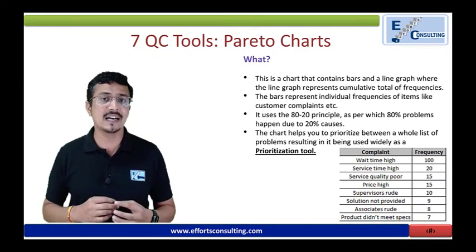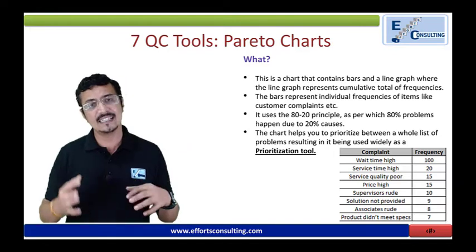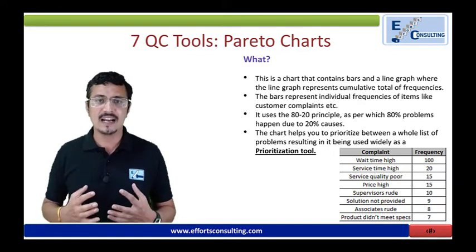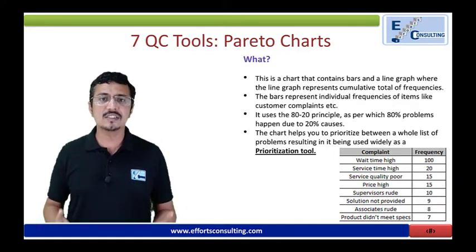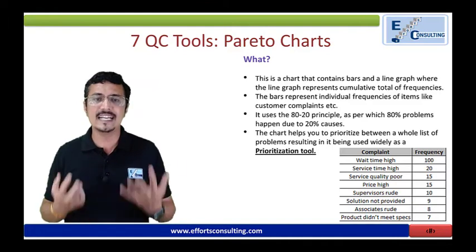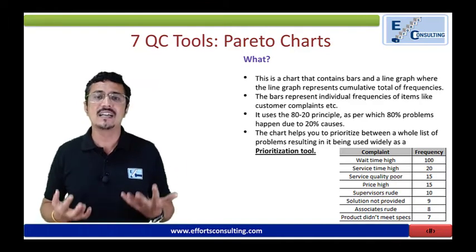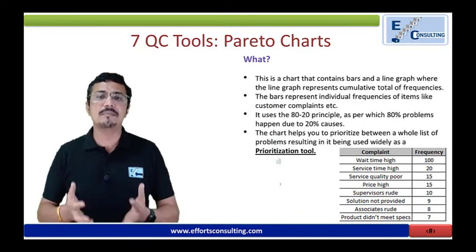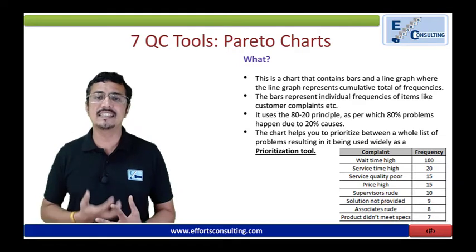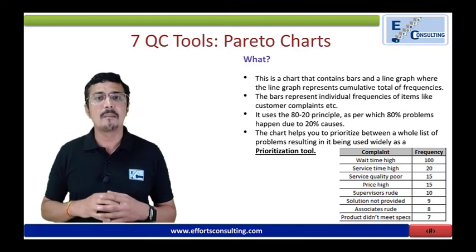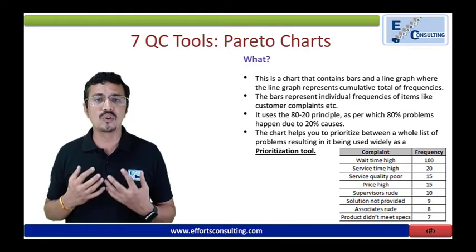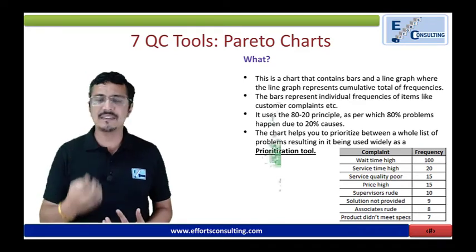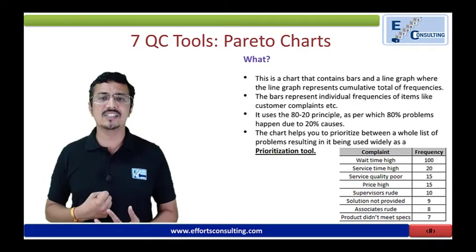He conducted a similar exercise first for the entire Milan city and then for the entire country, and the results were almost similar. He identified that 20 percent of the people are having 80 percent of the net worth. This particular finding is the Pareto rule or 80/20 analysis, and it is a very handy analysis.